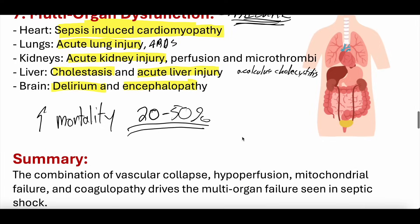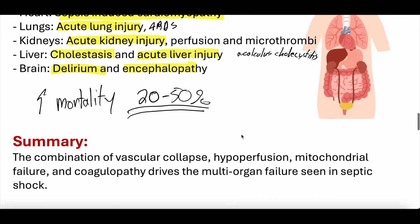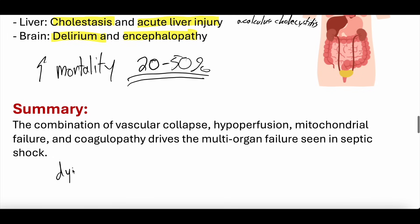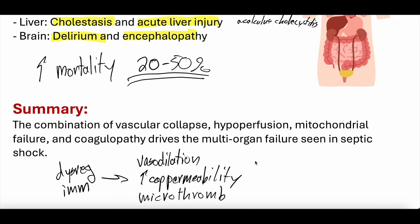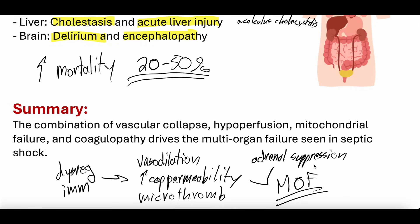Septic shock pathophysiology is really multifactorial. It's a combination of that dysregulated immune response leading to vasodilation and hypotension, increased capillary permeability with fluid leaking into the tissues causing hypovolemia, microthrombi and direct microvascular injury, adrenal suppression with insufficient cortisol release — all of which can culminate in multi-organ injury or failure. Hopefully that was a helpful high-level overview of the pathophysiology of septic shock.